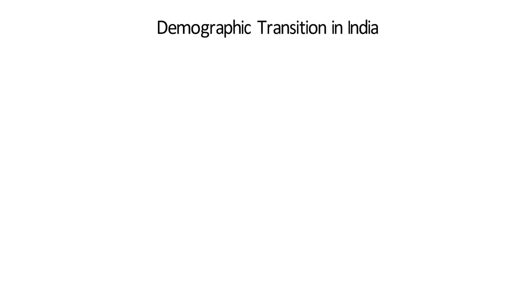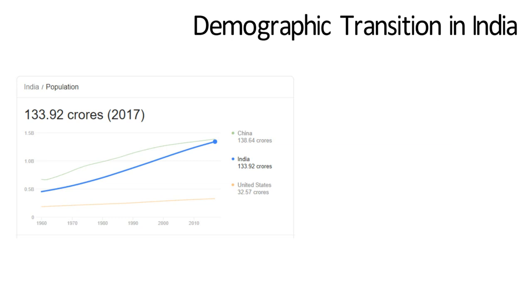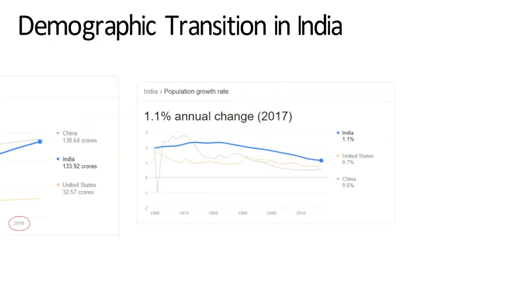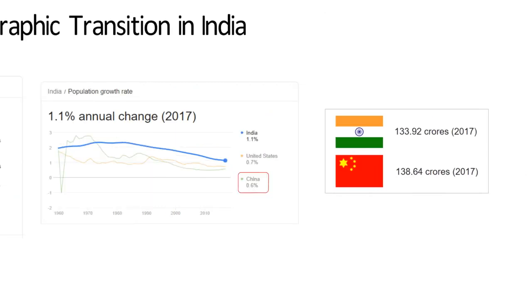In this video, we will learn about the demographic transition in India. We all know that the population of India is very high. The country has doubled in size in just 40 years. At present, the annual growth rate of India's population is around 1.1%. If you see China's annual population growth, it is around 0.6%. By looking at the population growth rate, it is estimated that India will surpass China as the world's most populated country in the next couple of decades.